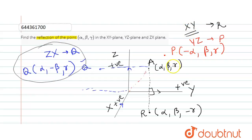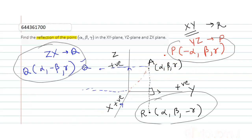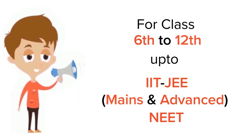So the answers are: for the ZX plane, the reflection is alpha, minus beta, gamma; for the XY plane, the reflection is alpha, beta, minus gamma; and for the YZ plane, the reflection is minus alpha, beta, gamma.